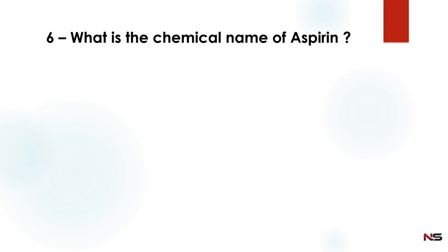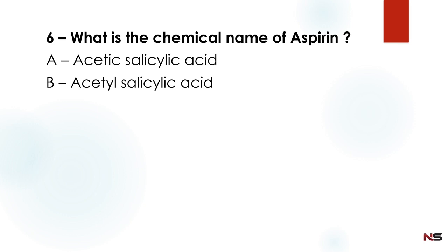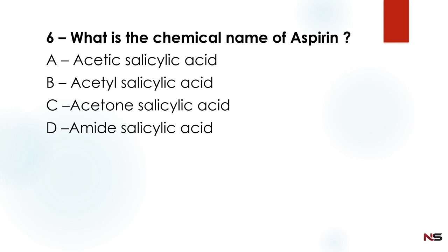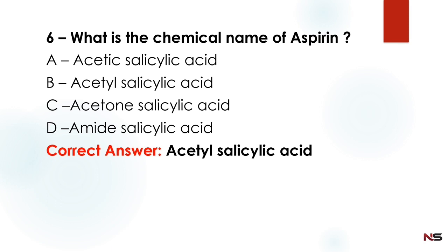What is the chemical name of aspirin? Option A: acetic salicylic acid. Option B: acetyl salicylic acid. Option C: acetone salicylic acid. Option D: amide salicylic acid. The correct answer is option B — acetyl salicylic acid.